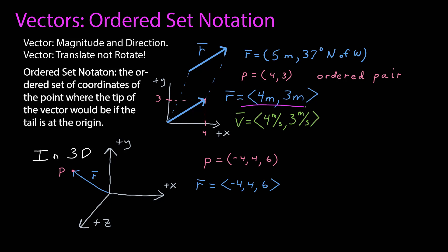Just remember the difference. This first ordered triplet represents that point, where this ordered triplet represents this vector.